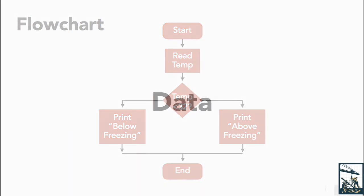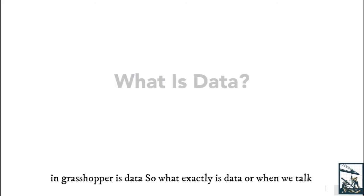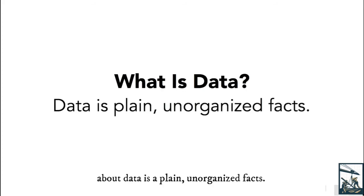In flowcharts, data is the input that goes through a process to produce output. Data consists of plain and organized facts.